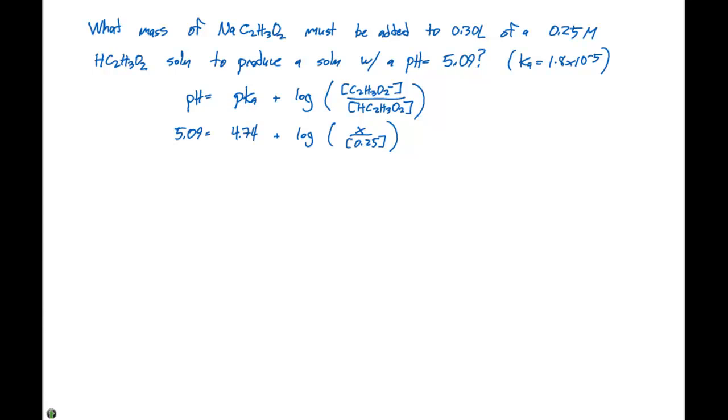If we rearrange this particular equation, we get 0.35 is gonna equal the log of X divided by 0.25. That means that 2.24 is gonna equal X divided by 0.25, and X is going to be 0.56 molar, which is going to equal the concentration of C2H3O2 minus, the concentration of the acetate ion.